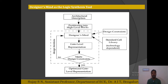Consider how a designer would convert a high level description into an optimized gate level description without any computer aided design tool. The first thing is the architectural description — any design will have an architectural description first, and depending on the design, the designer proceeds accordingly.